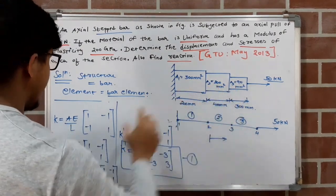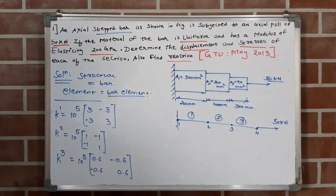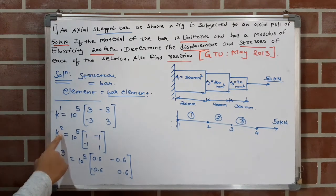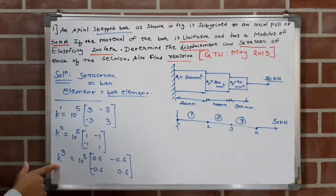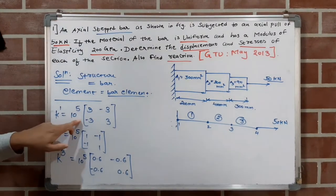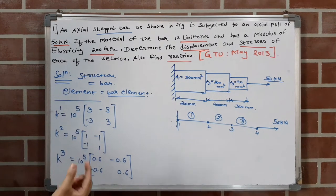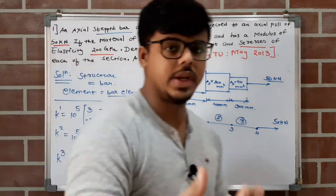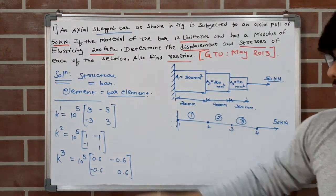Similarly, I have written the elemental stiffness matrices for elements 2 and 3. Note this is not k² or k³ — it represents the elemental stiffness matrix of the second and third elements respectively. The important thing is we keep one common term across all three matrices. The remaining terms are multiplied into the matrix. We are done finding all three elemental stiffness matrices.